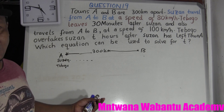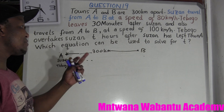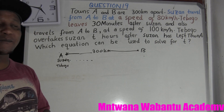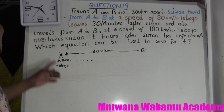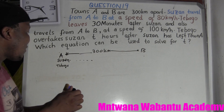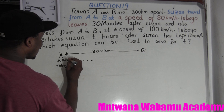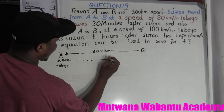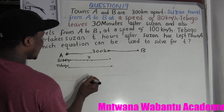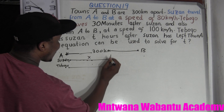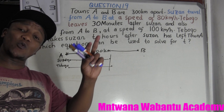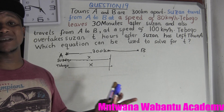Teboho overtakes Susan at T hours after Susan has left. After time T, Teboho overtakes Susan. So let me tell you the best way to solve this question. We need to find which equation can be used to solve for T — the time where he overtakes her. They're going to cover the same distance at the overtake point.